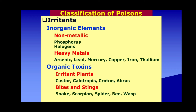The second major subcategory under irritants is the organic toxins, which comprise irritant plants like castor, calotropes, croton, and of course Abrus, which we will be discussing in detail in this episode. Do not forget bites and stings — there are a number of venomous creatures which bite or sting, giving organic toxins of animal origin: snake, scorpion, spider, bee, and wasp are some examples.